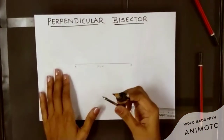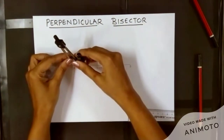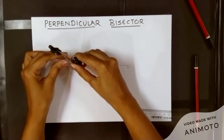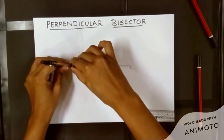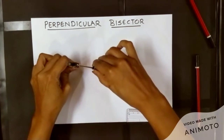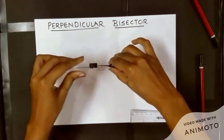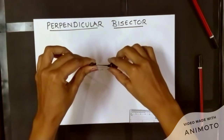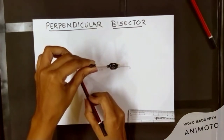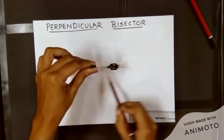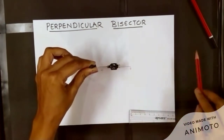Now to draw the perpendicular bisector, we have to take a compass and keep its pointed side on one of the end points of your line segment and take approximately more than half the distance of the given line segment. You can tell whether you have taken more than half distance because the part of the line segment between the first end point and your pencil should look bigger than the other part.